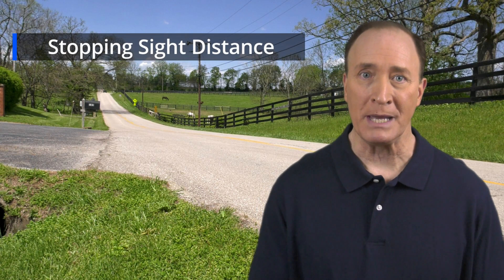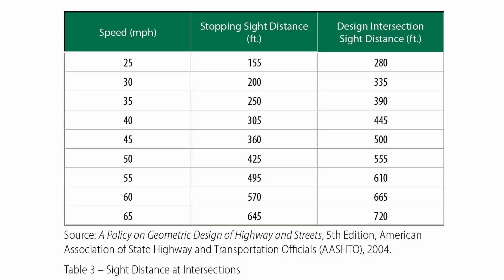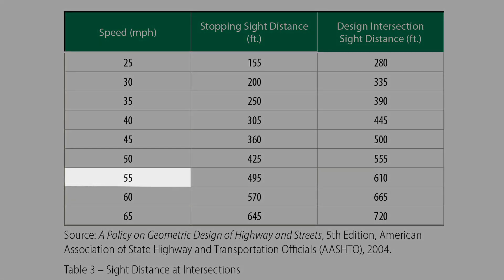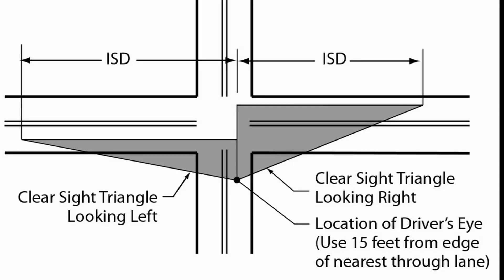If it is not possible to achieve intersection sight distance, then every effort should be made to meet the stopping sight distance. To find the stopping sight distance, use Table 3 from the FHWA Intersection Safety Manual. For example, at 55 miles per hour, the stopping sight distance would be 495 feet. This is less than the intersection sight distance of 610 feet. Stopping sight distance provides sufficient distance for drivers to anticipate and avoid collisions. However, in some cases this may require a major road vehicle to stop or slow to accommodate the maneuver by a minor road vehicle. To enhance traffic operations and safety, intersection sight distances are desirable.